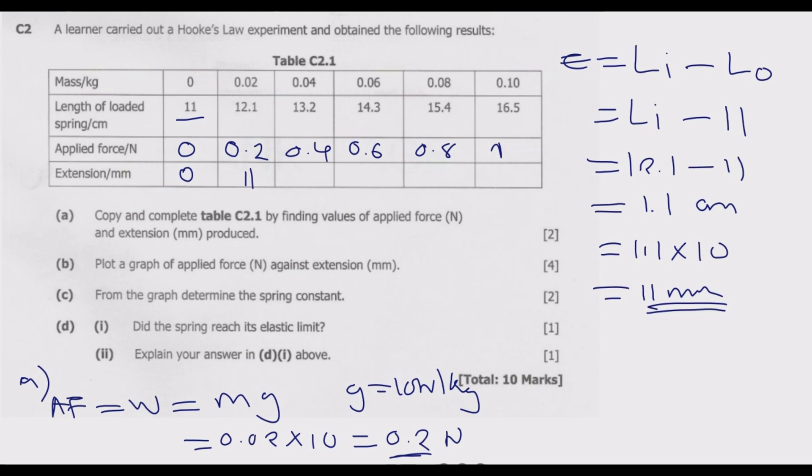Similarly, 13.2 minus 11 equals 2.2 centimeter, convert to millimeter which is 22. Here we have 33, then similarly we have 44, then 16.5 minus 11 equals 5.5 times 10 equals 55. This is how we complete this table to get the two marks. Next we plot a graph of applied force against extension.